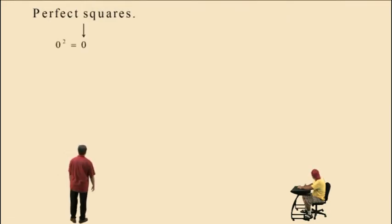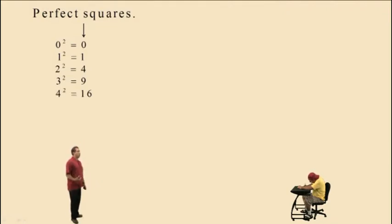Now let's look at numbers that are classified as perfect squares. 0 is a perfect square because 0 squared is 0. 1 is a perfect square because 1 times 1 is 1. 4 is a perfect square because 2 squared is 4. 9 is a perfect square because 3 squared is 9. 16 is a perfect square because 4 squared is 16.